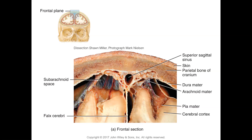The arachnoid mater is the second meningeal layer beneath the dura mater. In the cranium it has projections called arachnoid villi in the subarachnoid space — the space between the arachnoid and pia mater. The pia mater is tightly adherent to the surface of the cerebrum and goes into every single sulcus and gyrus of the brain. The dura mater, by contrast, stays between the major fissures only.